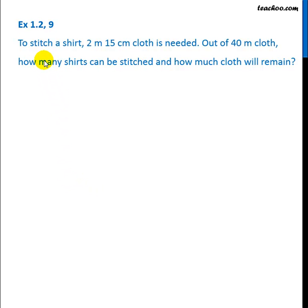In this question it is given that to stitch a shirt we require 2m 15cm of cloth. So one shirt requires this much and the total cloth we have is 40m.